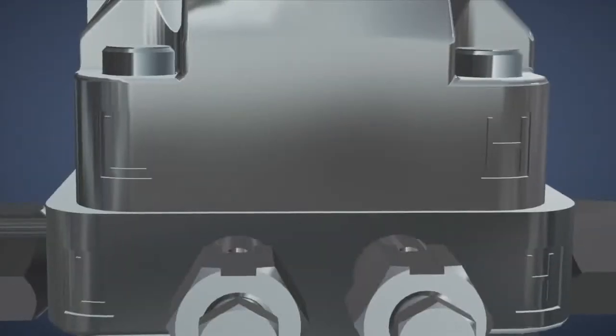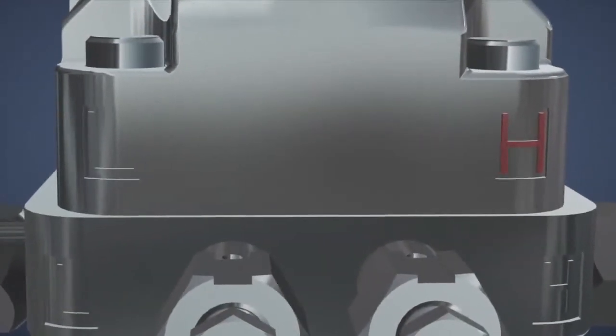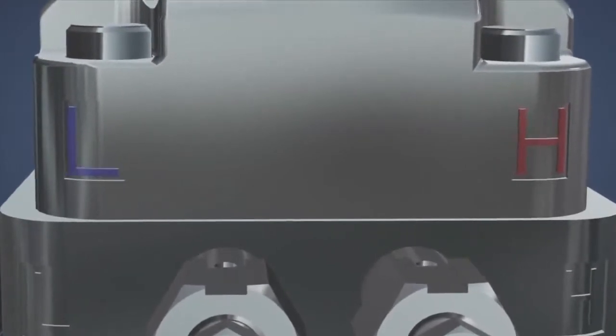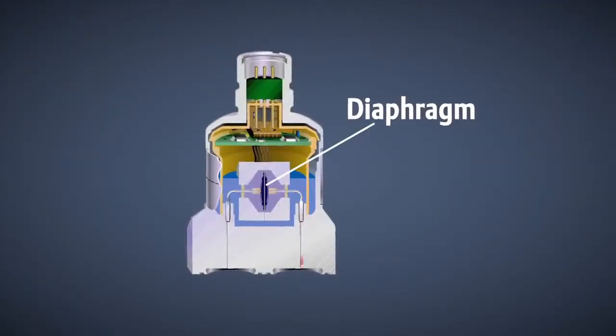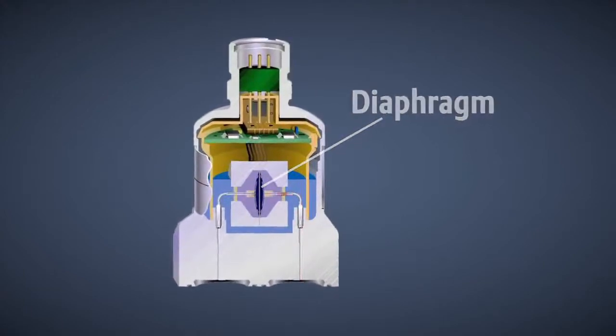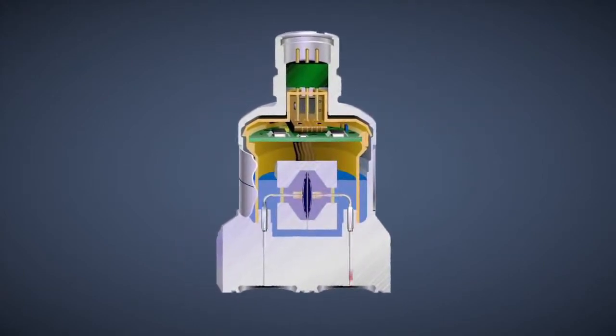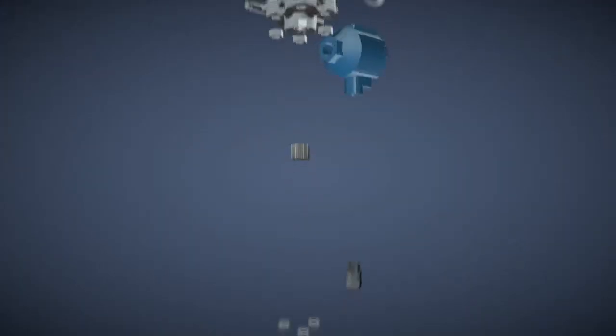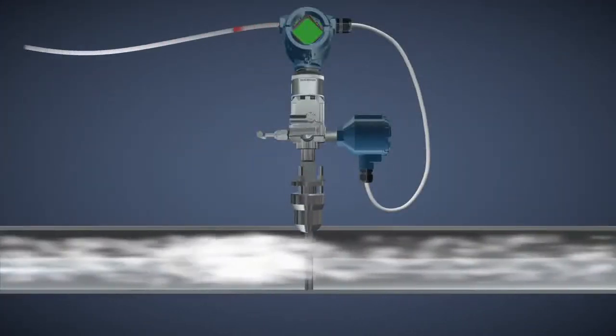On one side of the transmitter is the high-pressure side, on the other, the low-pressure side. The diaphragm deflects relative to the pressure change from one side to the other. It is very sensitive and can detect very small changes in pressure. The transmitter then relays the DP measurement to the control system.